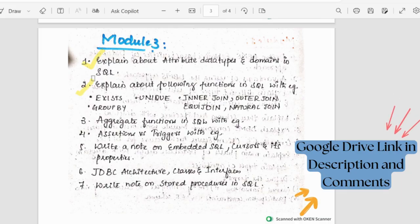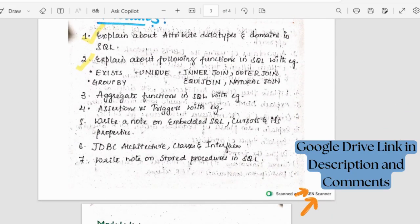Next coming to functions, explaining these functions - exist, unique, group by, different types of joints. Then we have aggregate functions. There are five aggregate functions - sum, max, min and all. Then what are assertions, triggers, explaining them with an example. Then a note on embedded SQL and its properties.